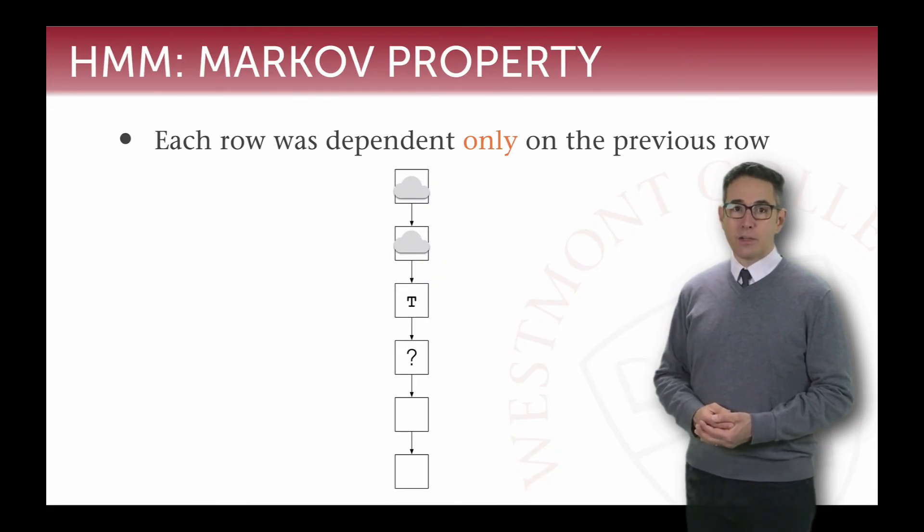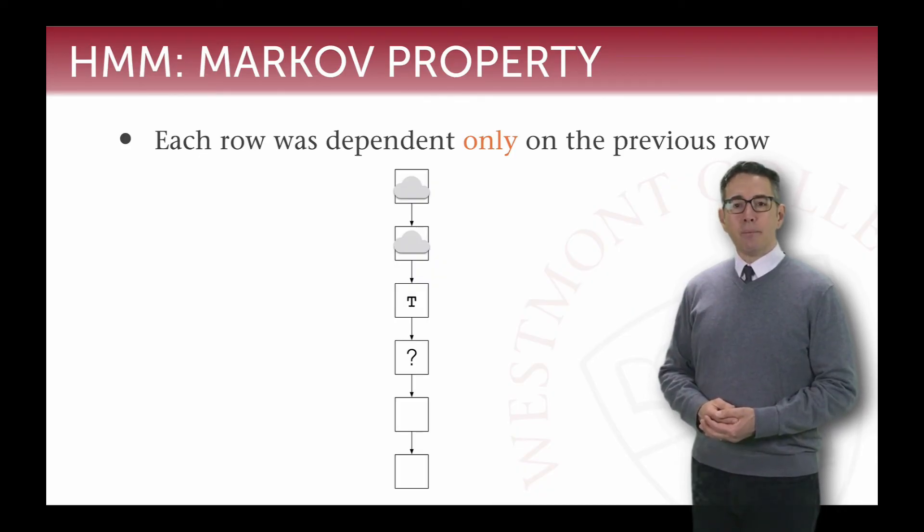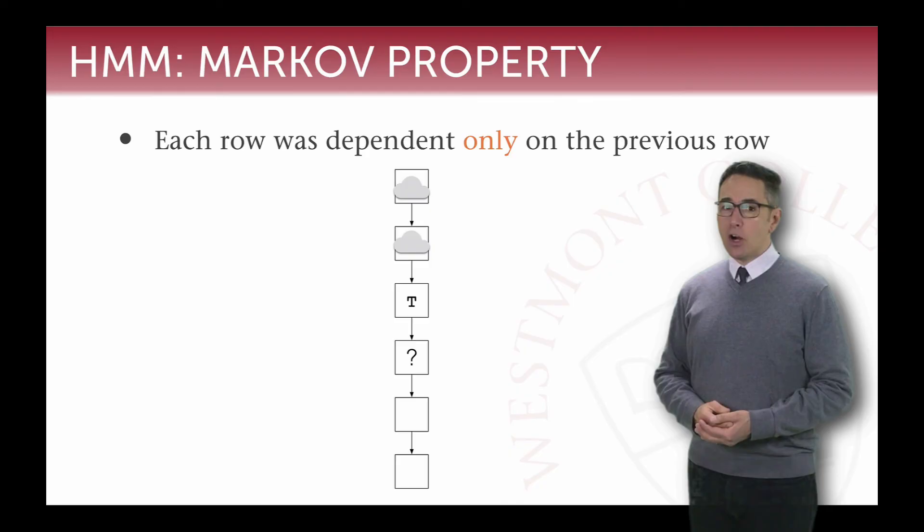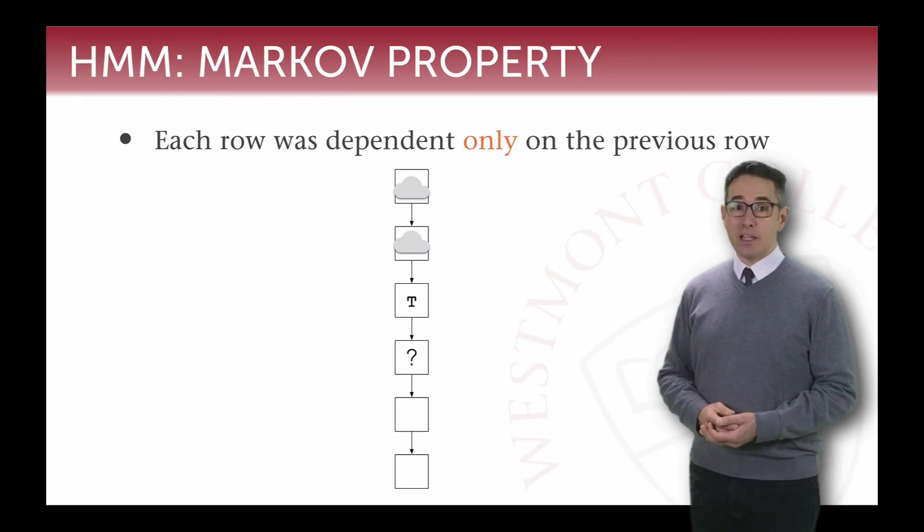trying to figure out what should be in that question mark location, the Markov property says that we need to base our decision on what came beforehand, so the T, but we don't base it on anything that came before the T.